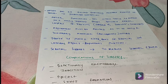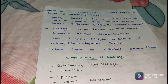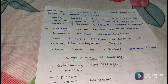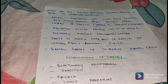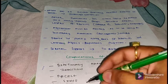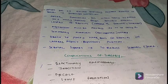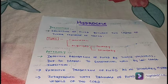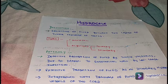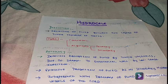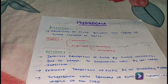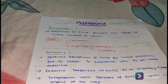Complications of hydrocele surgery include: reactionary hemorrhage, infection, pyocele, sinus formation, and recurrent hydrocele. Today I completed the topic of hydrocele and hope I explained it in detail.